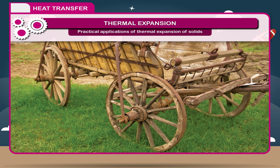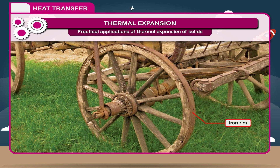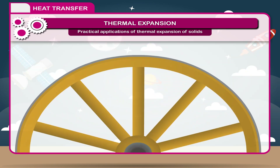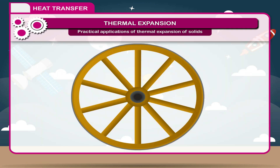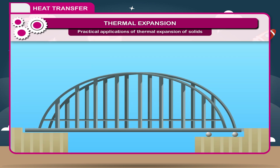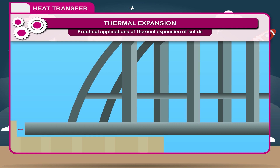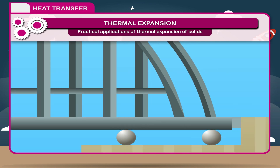For the wooden wheels of tongas, the iron rims are made of the same size as the wheels themselves. The rims are heated before fitting so that they expand and fit over the wheels. After fitting, cold water is poured over the rims. On cooling, they contract and grip the wheels firmly. In the construction of bridges, some space is left to allow expansion to take place during high temperature. Therefore, during the construction of a bridge, one end is fixed and the other end is mounted on a roller to accommodate the expansion or contraction during the change in temperature.